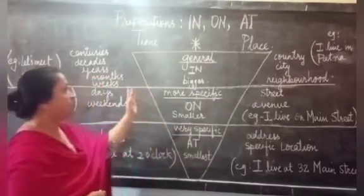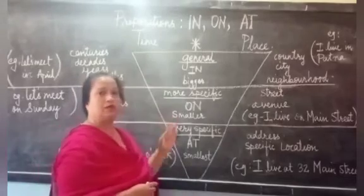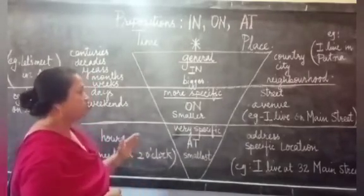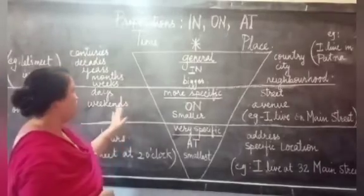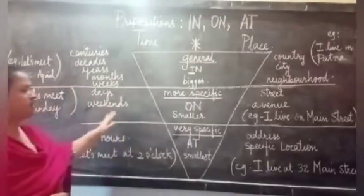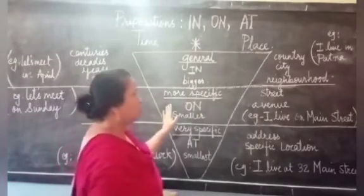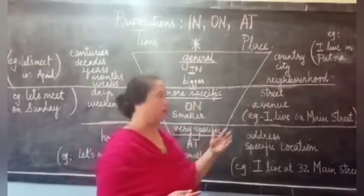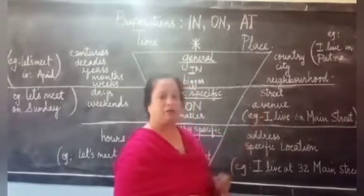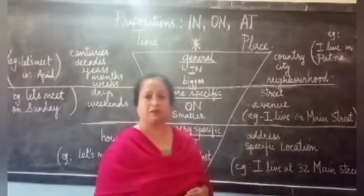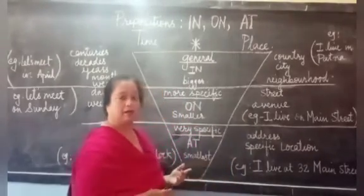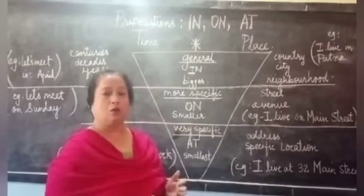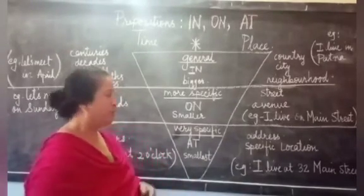When we talk about the preposition 'on' for time or place, we use it when we are slightly more specific. For time, 'on' is used to talk about certain days or weekends. For place, 'on' is used to mention a street or avenue — for example: I live on Main Street. So compared to 'in', using 'on' for place gives a little more specific information.